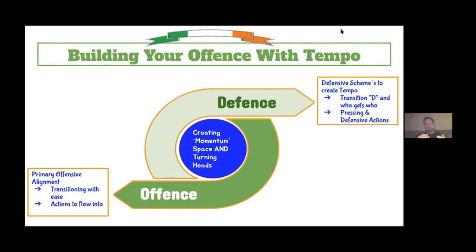Everything that we've done in the past has been about turning heads, and we'll talk more about it as we go through the presentation. What we want to try and do with our offense is have a primary alignment — whether that's four outs, five outs, or whatever it is. We want to be able to flow into actions from our primary alignment to keep it fluent for the players, as opposed to having a number of different alignments where there's confusion, we lose those three or four seconds, and we lose the momentum space — which is the advantage to be able to attack the defense.